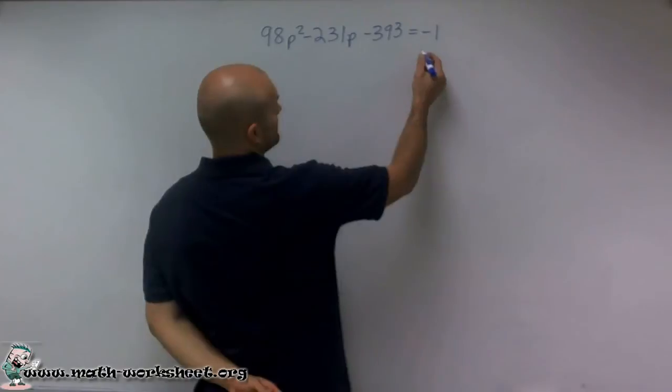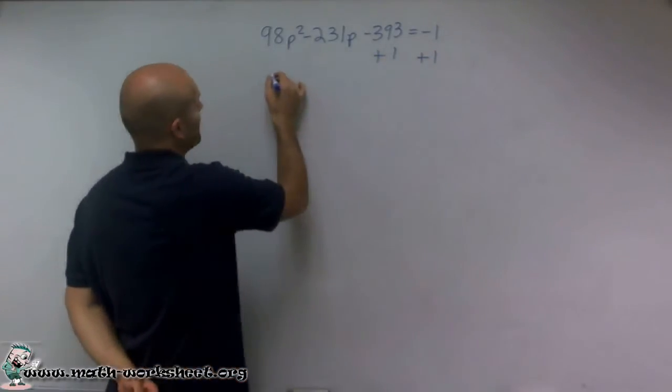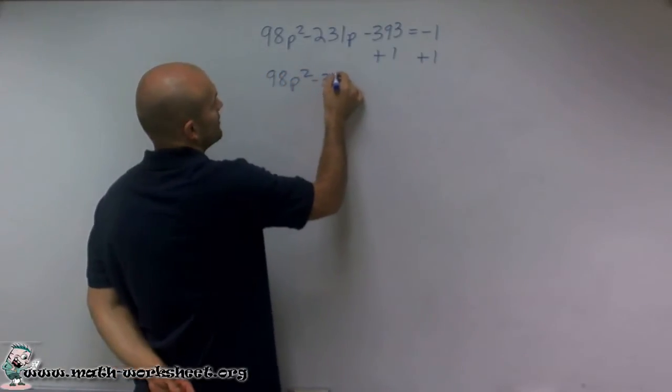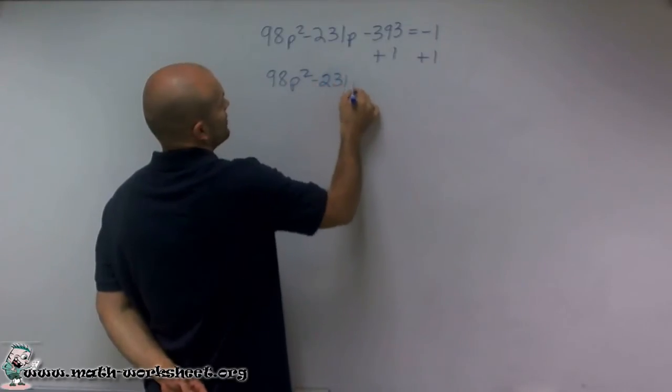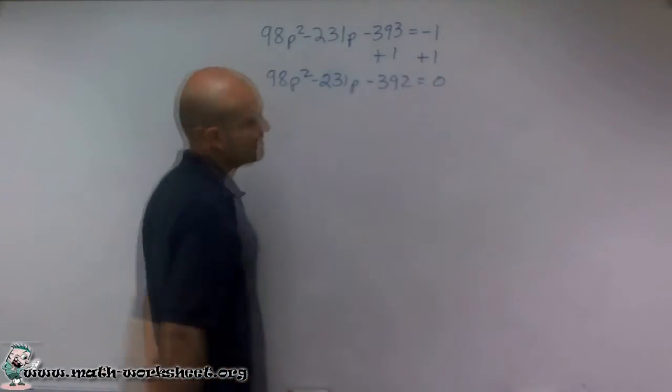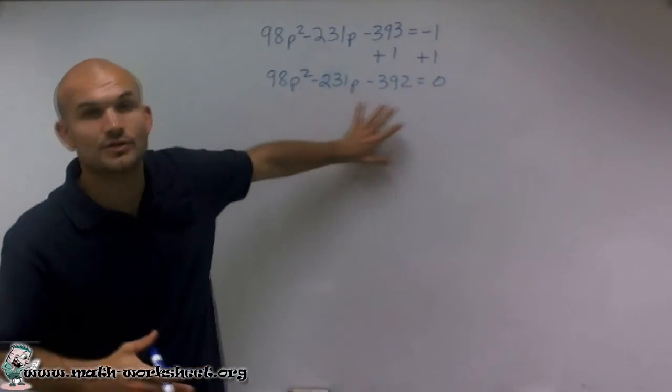So the first thing we're going to want to do is add a 1 to both sides. Now I have 98p² - 231p - 392 equals zero. Now this is important because now what I can do is I can factor this.